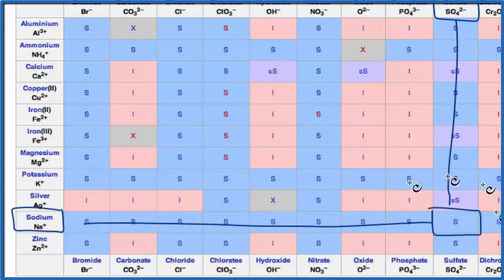It'll dissolve and dissociate into its ions. You'll have an aqueous solution of sodium ions, Na+, and the sulfate ion, SO4 2-.